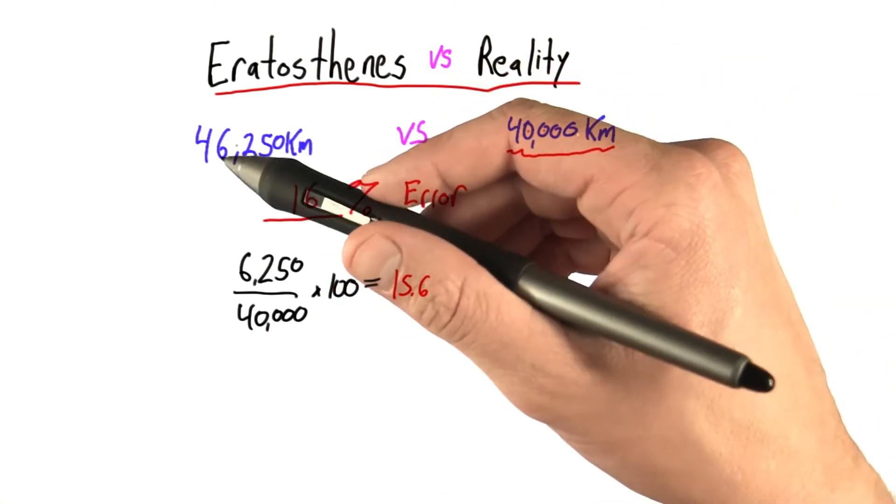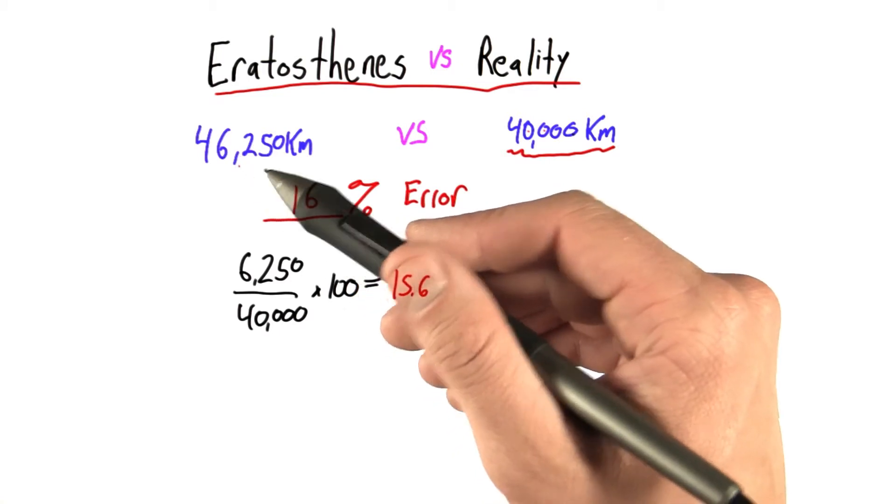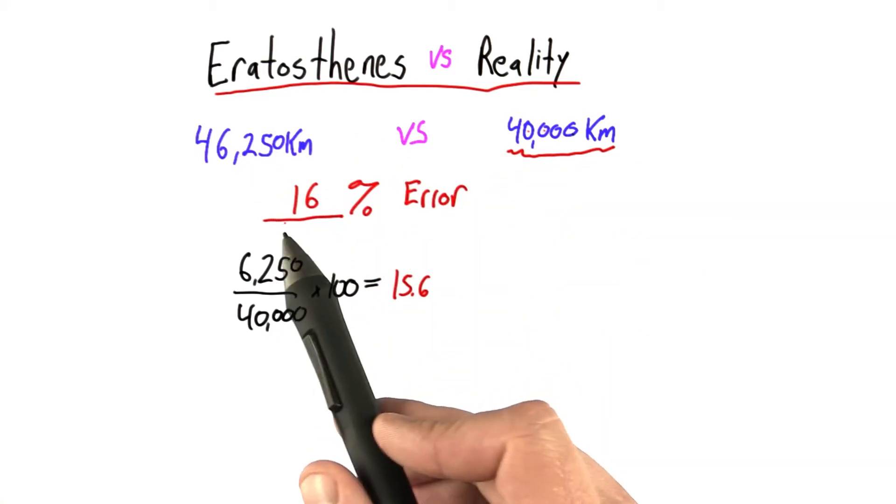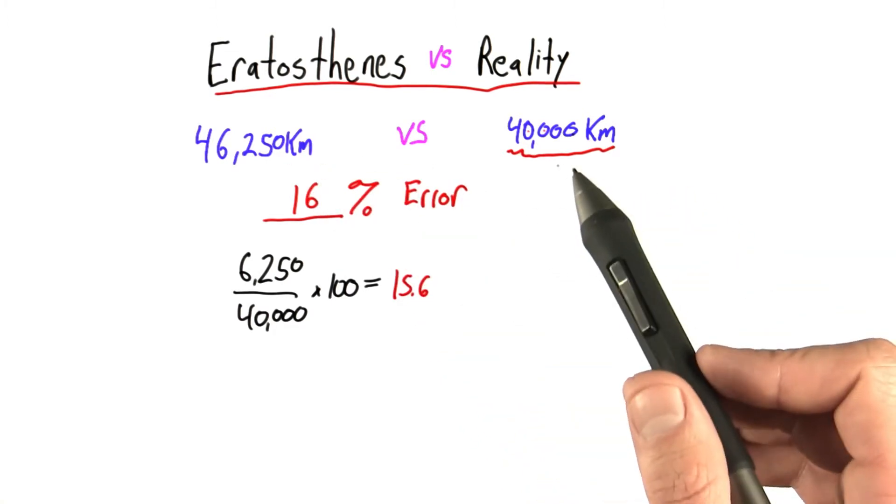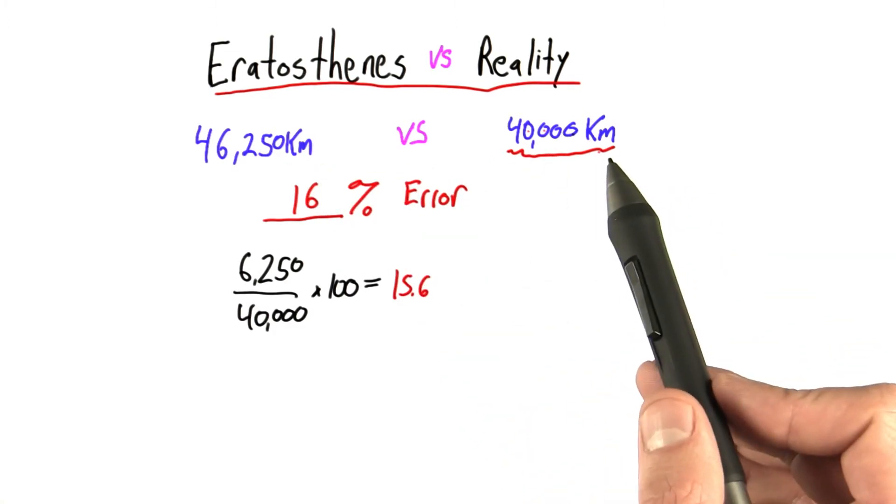So, when we make some calculations and get an answer that's different, we can immediately quantify how wrong we were. But when Eratosthenes was doing this experiment, he didn't know that. He had no idea what the actual circumference was.